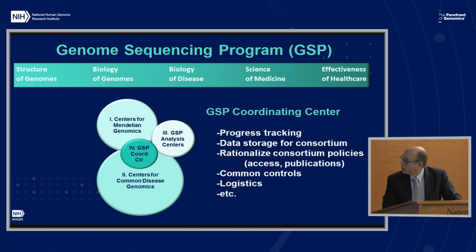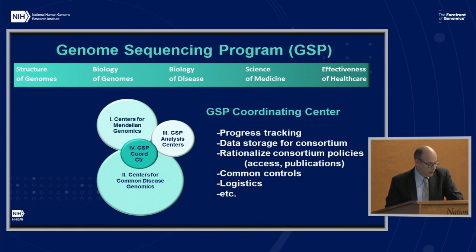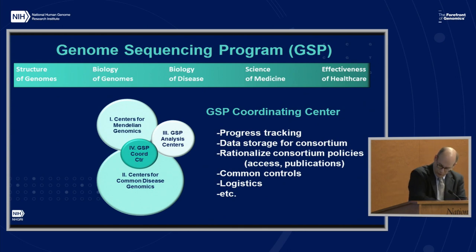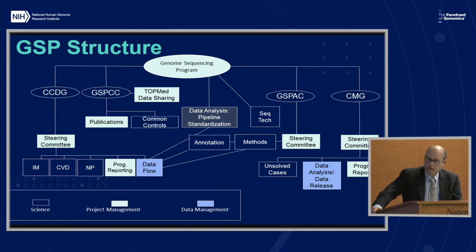There is also the coordinating center, which tracks progress, helps with data storage for the consortium, helps lead and rationalize consortium policy development — so data access and publications, for example. They spearhead the common controls effort and help with logistics. The structure is fairly typical for this kind of consortium. It is a little bit broke, but it's flexible and responsive to where the consortium wants to go.